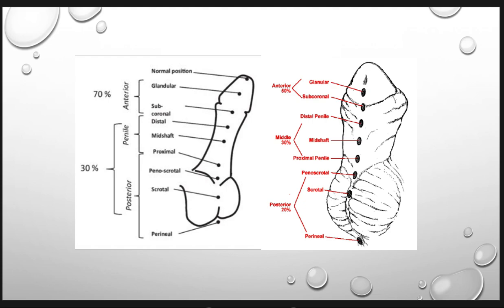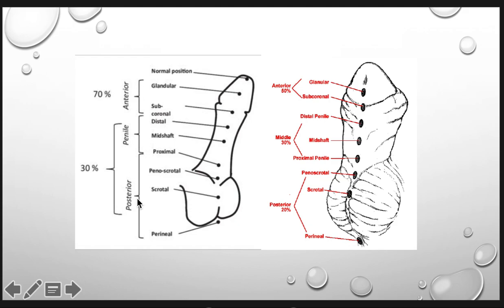This is how hypospadias looks like. The glans opening is not located in the normal position, which is at the tip of the glans. It could be in the glandular, subcoronal, distal, mid-shaft, proximal, penoscrotal positions, and the most proximal opening would be the scrotal. The distribution is about 70% anterior and 30% in the penile or posterior area.